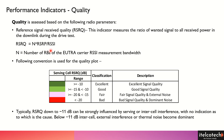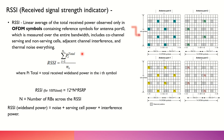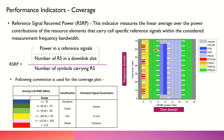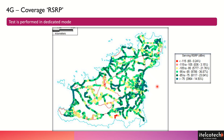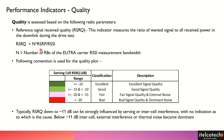As we have seen, RSSI is the power across all OFDM symbols, and RSRP is the power distributed across reference signals only. When we divide both, whatever power is coming across different OFDM symbols carrying reference signals from the serving cell, neighboring cells, or external interference is considered, and from that we calculate the quality.